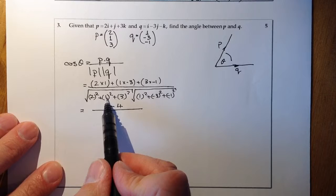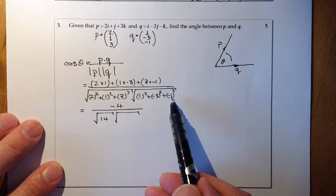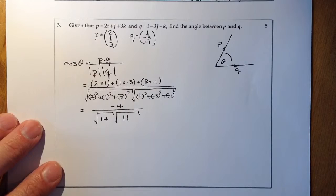And on the denominator, what we've got there is we've got 4 plus 1 plus 9. 4 plus 1 plus 9 will give me the square root of 14. And on this side here, I've got 1 plus another 1 plus 9. So that's going to give me root 11.